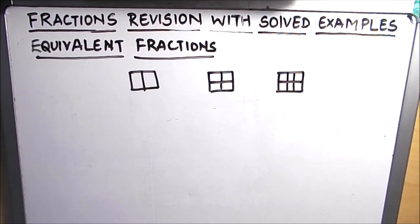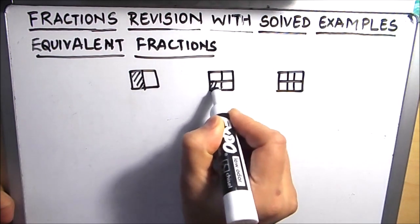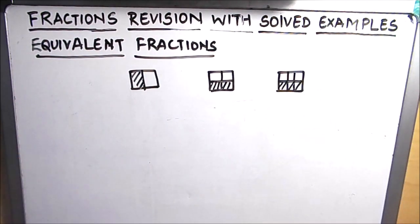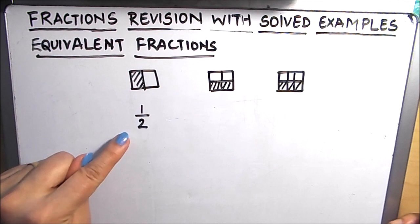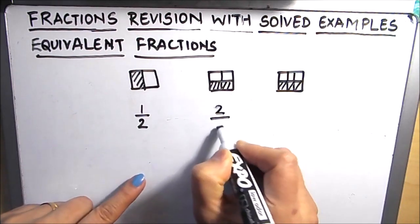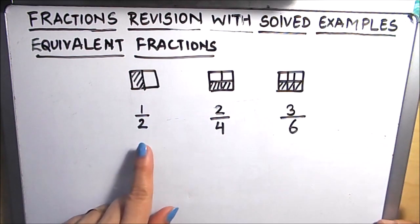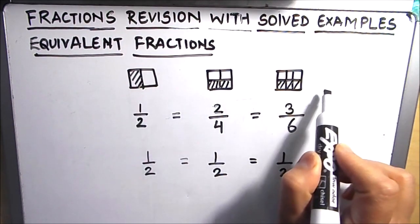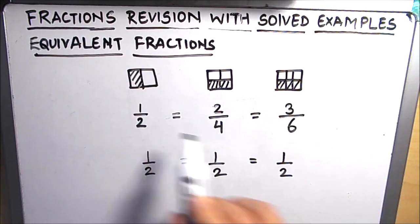Let's move on to equivalent fractions. Fractions with equal value are called equivalent fractions. We have three pictures where we have shaded a part of each picture. The fractions for the shaded parts are 1 over 2, 2 over 4, and 3 over 6. No matter how many parts you break the picture into, we see that only half of the picture is shaded — that means these are equivalent fractions, and the value remains the same.